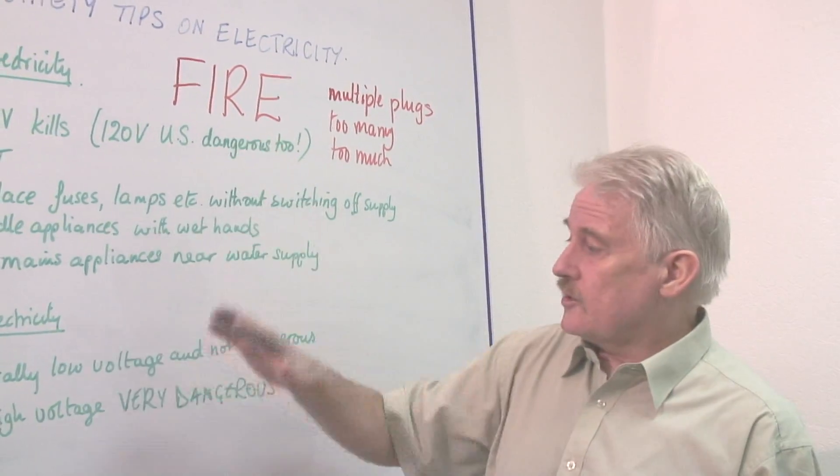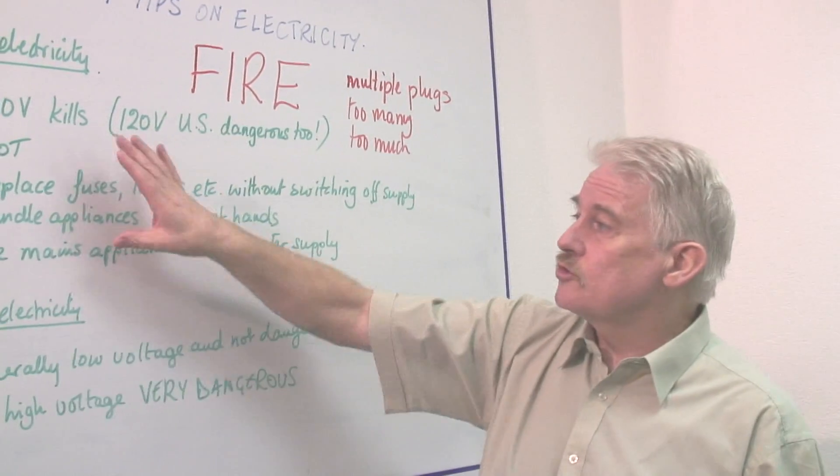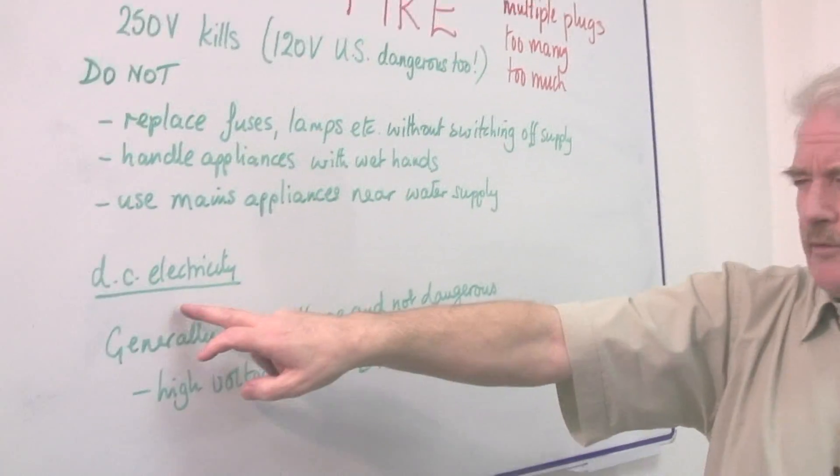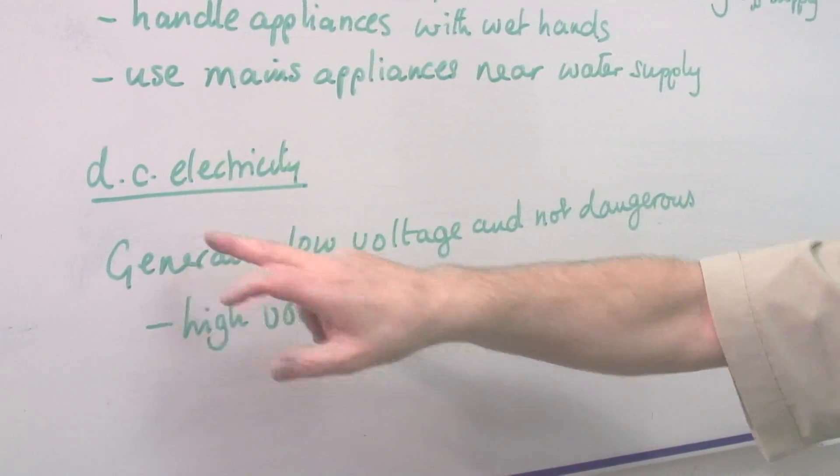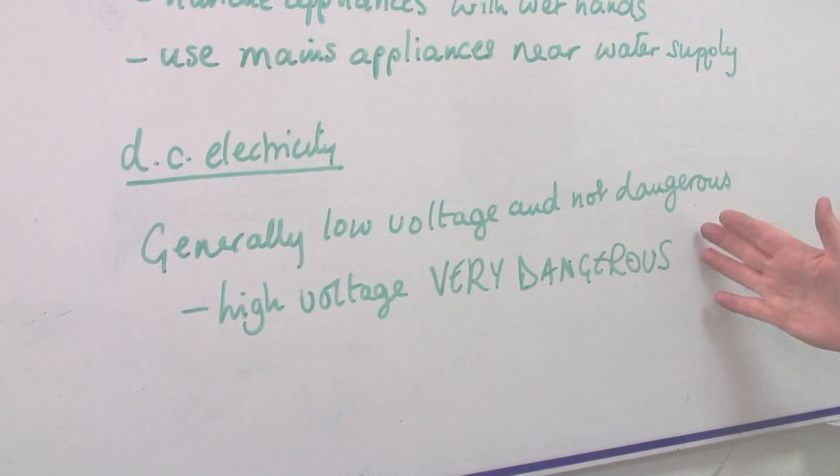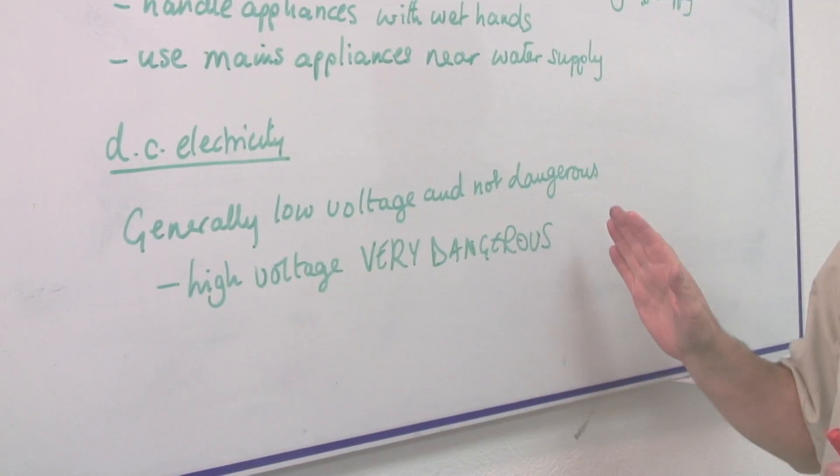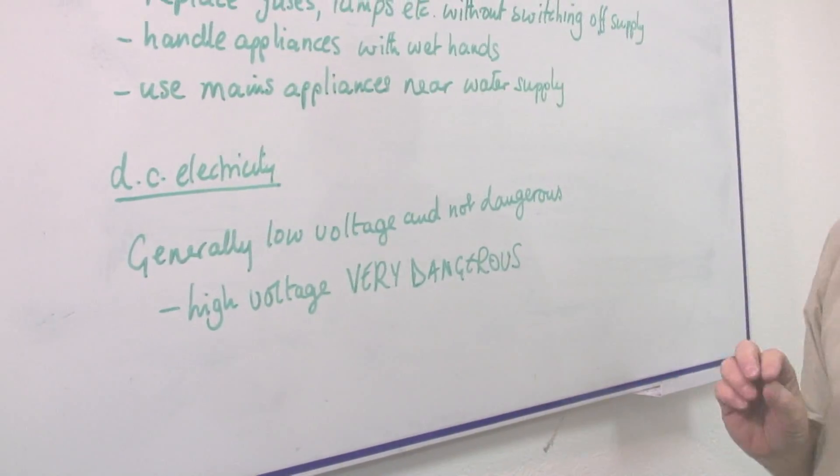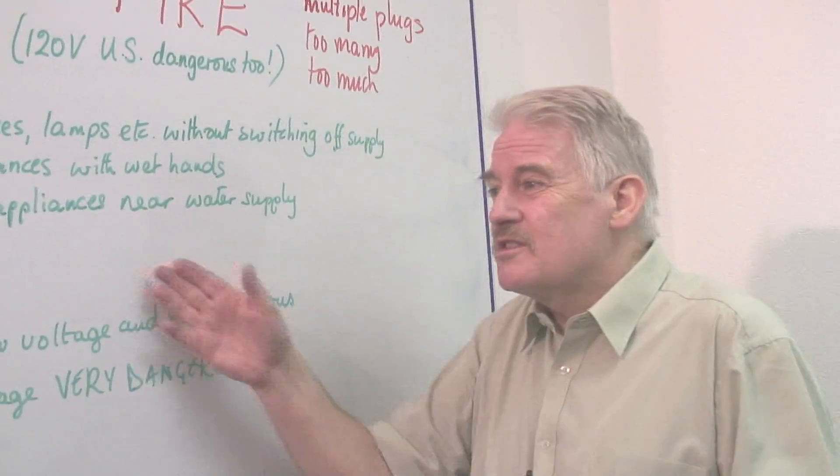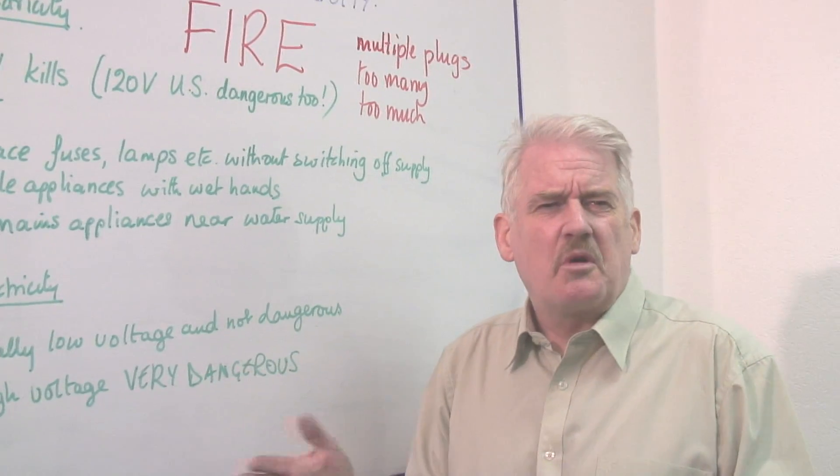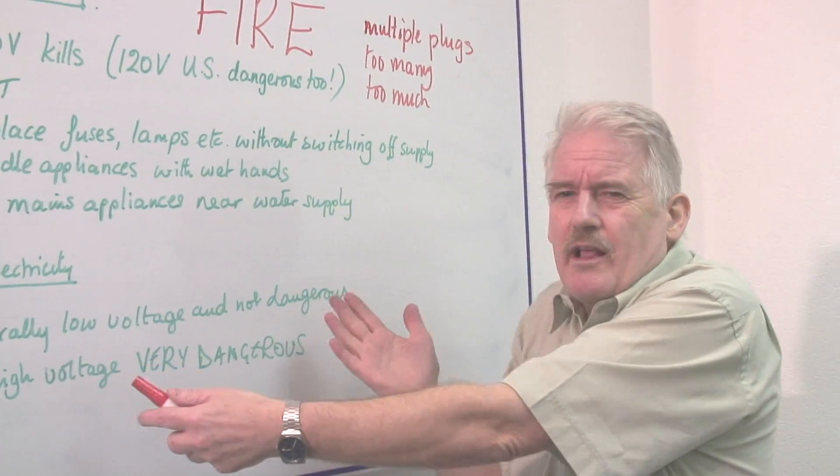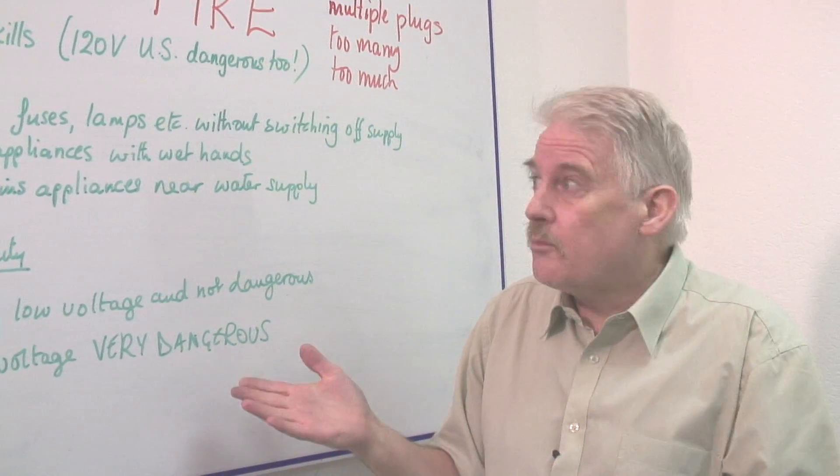So whilst I do say that yes, you should be aware of these, with DC electricity even more so because DC, direct current, is very dangerous—far more so than alternating current. But usually the voltages are very small, and therefore you don't worry. You don't have more than 12 volts, for example, normally.